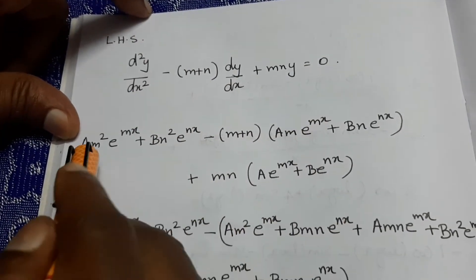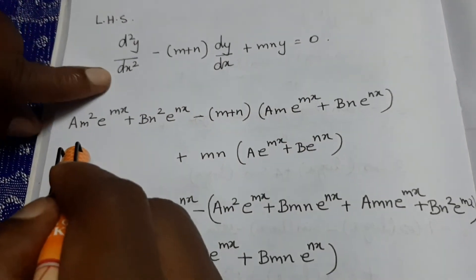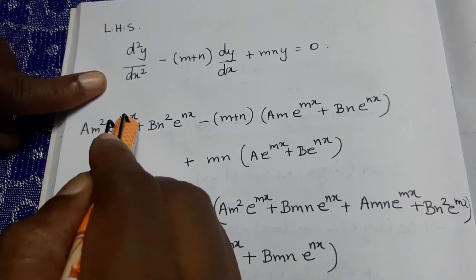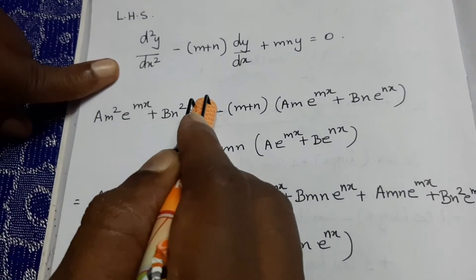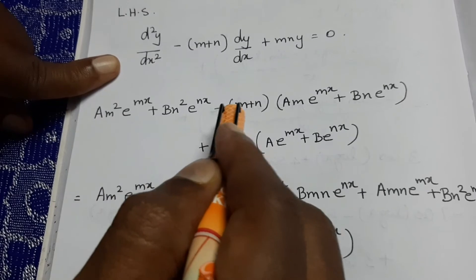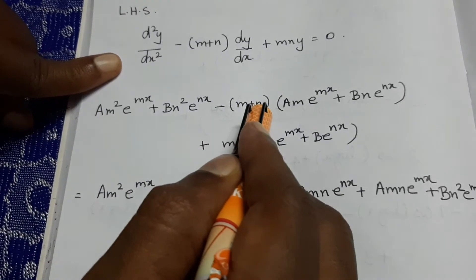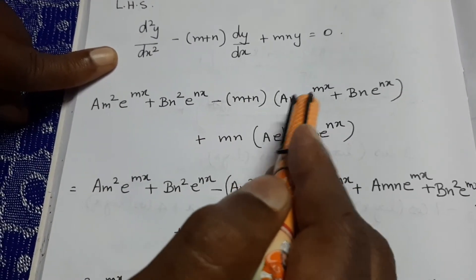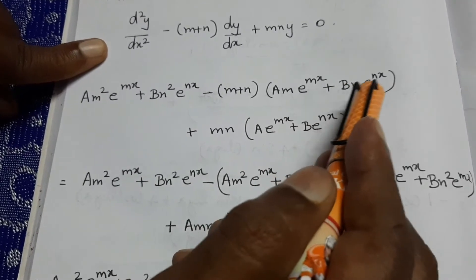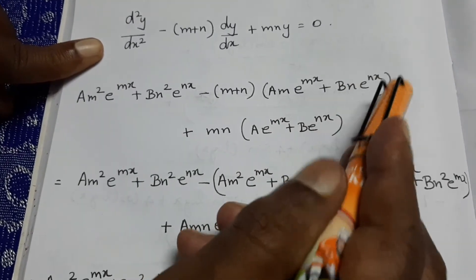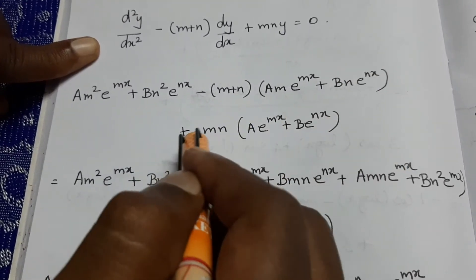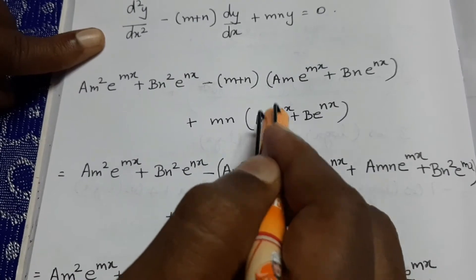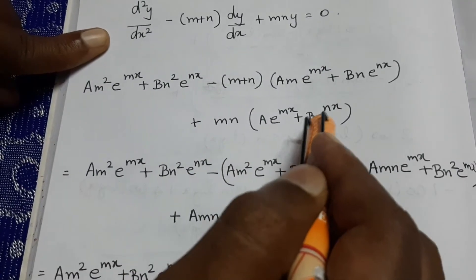Substituting d²y/dx² as a·m²·e^(mx) plus b·n²·e^(nx), and dy/dx as a·m·e^(mx) plus b·n·e^(nx), and y as a·e^(mx) plus b·e^(nx) into the left-hand side expression.